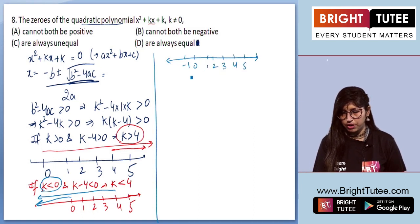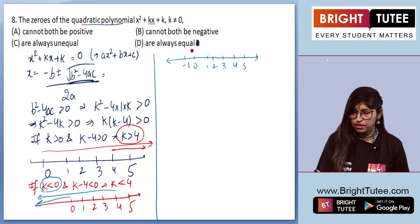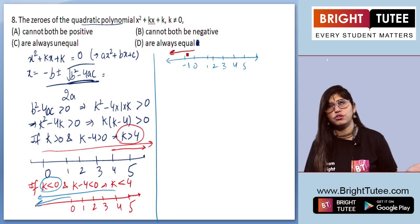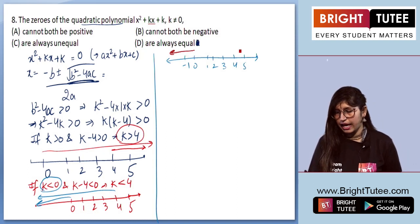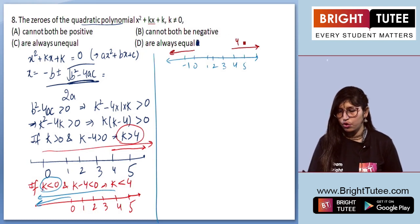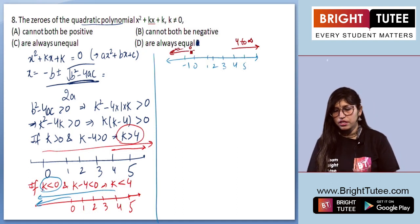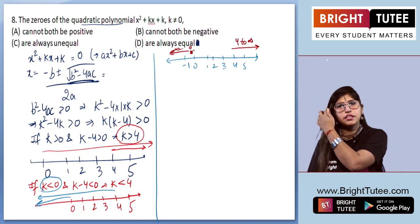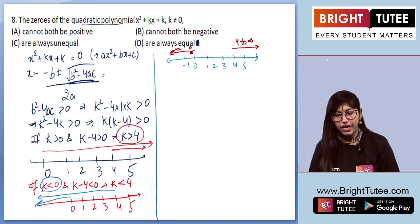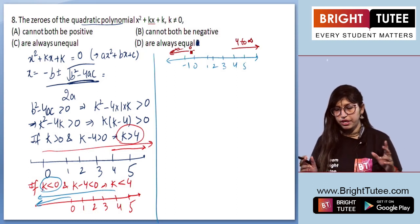So combining both cases on the number line: k < 0 means from 0 to minus infinity, and k > 4 means from 4 to infinity. These are the two valid ranges for k. Now let's check what the zeros look like for each case.